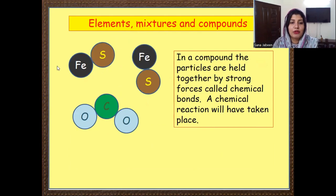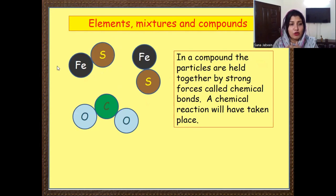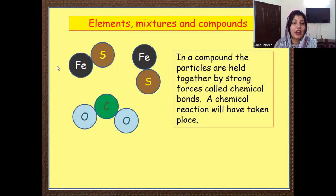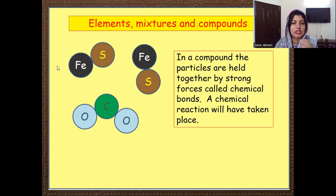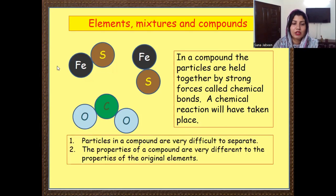Now, about the compound — as I mentioned, there are strong forces between them known as chemical bonds, and a chemical reaction is needed to separate them, like carbon dioxide gas, which is a compound. It is very difficult to separate carbon from oxygen — we can't do it using a simple physical method. We need a chemical reaction. Particles in a compound are very difficult to separate, and the properties of a compound are very different to the properties of the original elements.